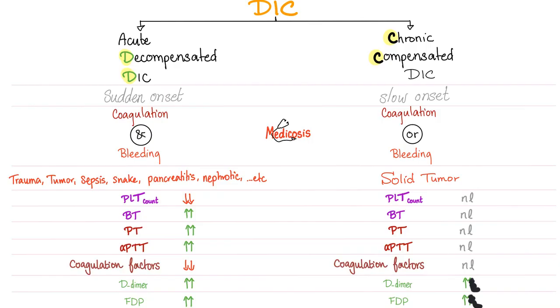Is it possible to find low platelet count, high bleeding time, high PT, high PTT, and low coagulation factors in chronic DIC? Yes, it is possible — after all, it's still a DIC.